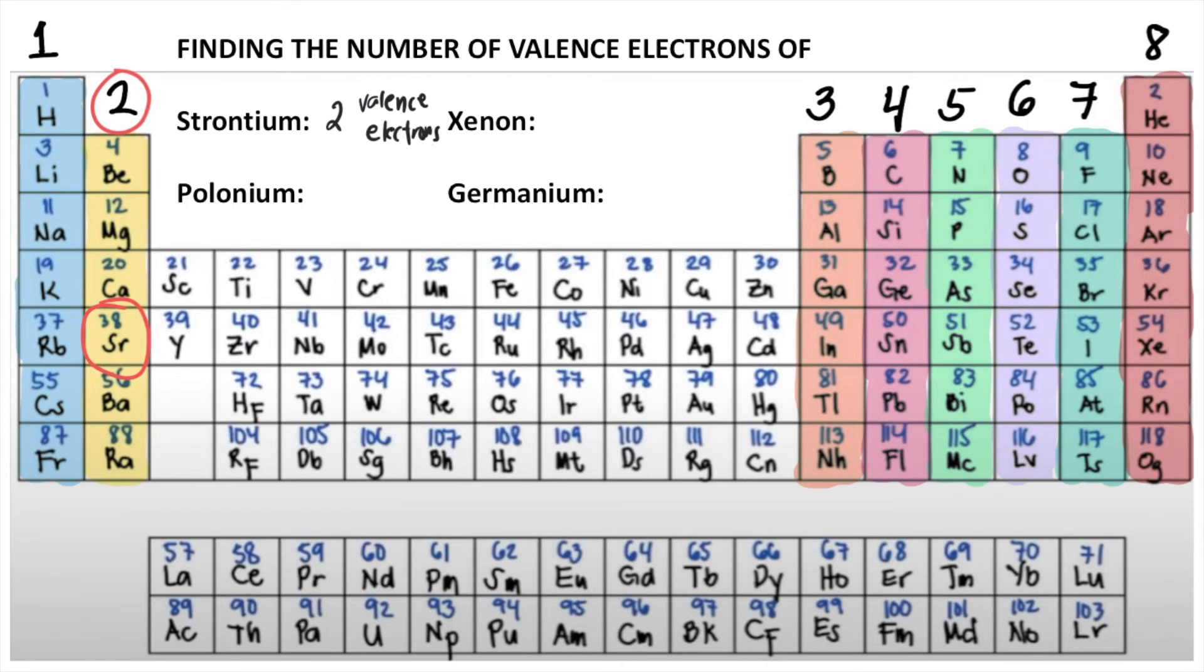How about polonium? Polonium is Po. So here's Po. It's under column 6, so 6 valence electrons.